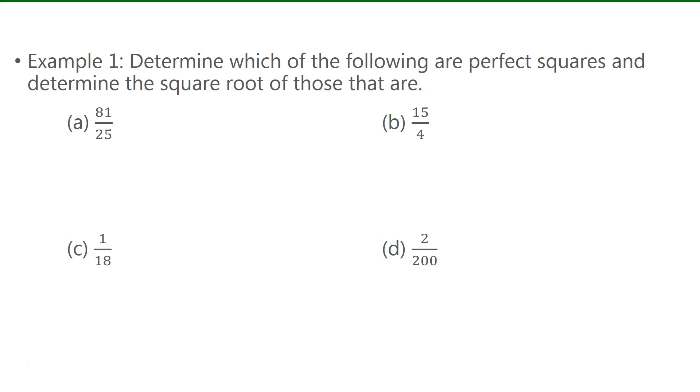For example 1 we have to determine which of the following are perfect squares and then determine the square root of those that are perfect squares. For a we have 81 over 25. Both 81 and 25 are perfect squares, so we're able to find the square root. Square root of 81 is 9 and the square root of 25 is 5.